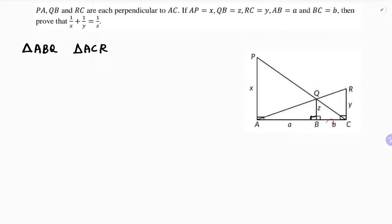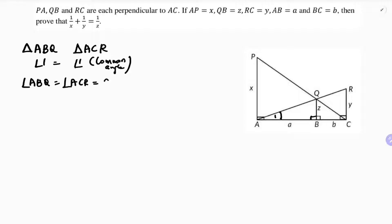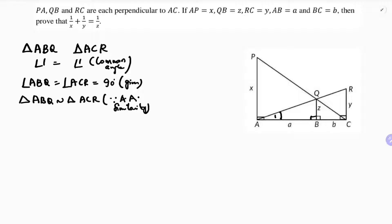Angle A is common in both triangles. Next, angle ABQ equals angle ACR equals 90 degrees, which is given. So triangle ABQ is similar to triangle ACR by angle-angle similarity — if two angles of two triangles are equal, then the triangles are similar.